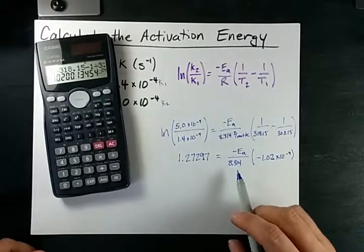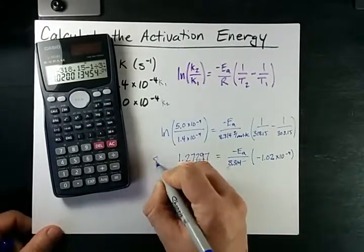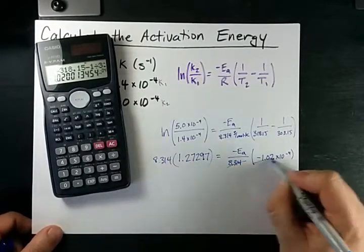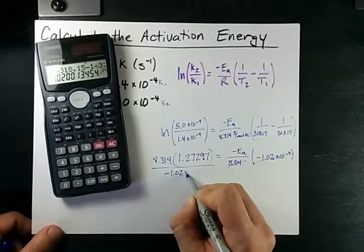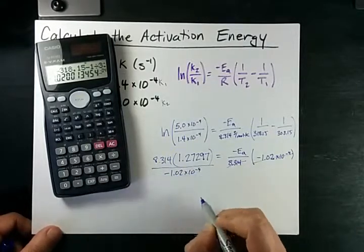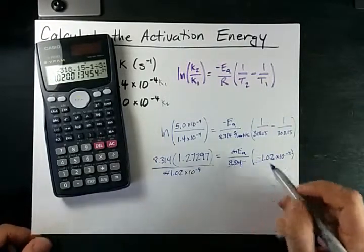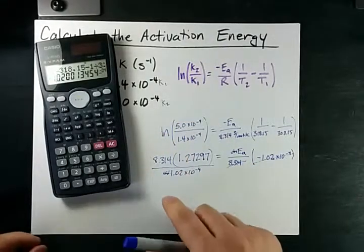Now to solve for EA, I'm going to multiply both sides by 8.314 and I'm going to divide both sides by negative 1.02 times 10 to the negative 4. Note too, that that negative will cancel with that negative and I've already isolated my activation energy. So let's do that.